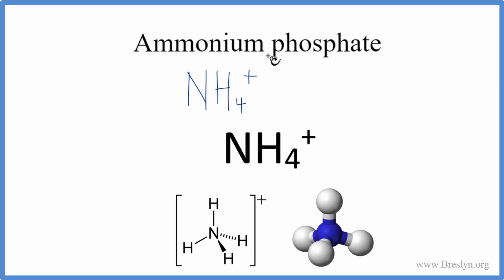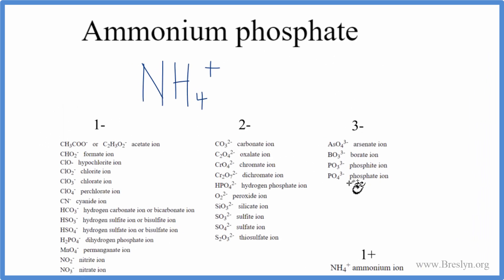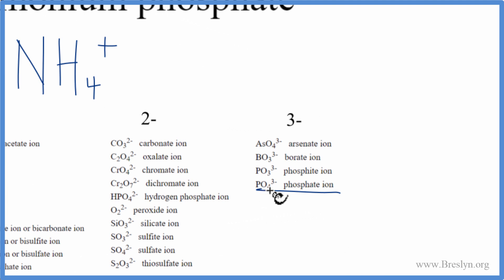Next we need to figure out the phosphate ion. We can see this ATE suffix, which tells us this won't be on the periodic table. So let's go back to our chart, and phosphate is right here: PO4 3-. Let's write that.